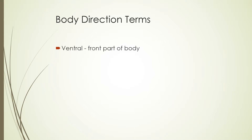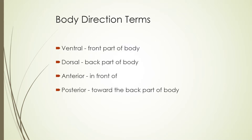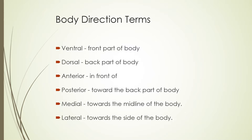In medical terminology, you're going to need to know the body direction terms, which we've gone over in AMP, or we will go over in AMP, so this will either be redundant or become redundant. The word 'ventral' means the front part of the body. The word 'dorsal' means the back part of the body. 'Anterior' is going to mean in front of something — in front of the elbow, in front of the knee. 'Posterior' is going to be towards the back part of the body. 'Medial' is going to be towards the midline — you can always remember M for medial and midline. And 'lateral' is going to be towards the side of the body.